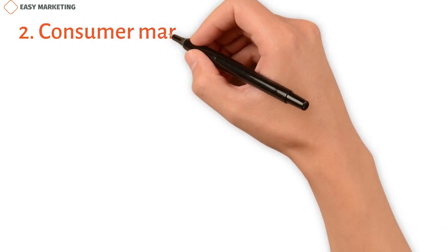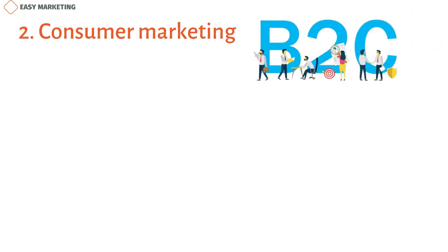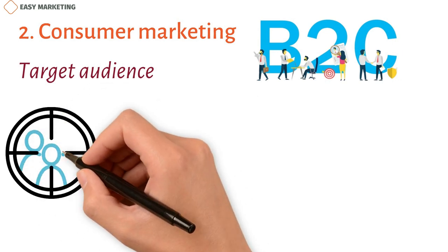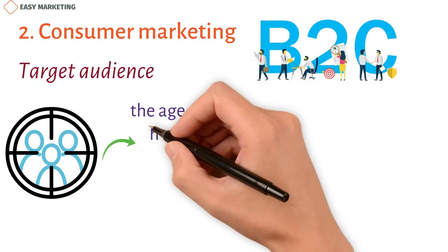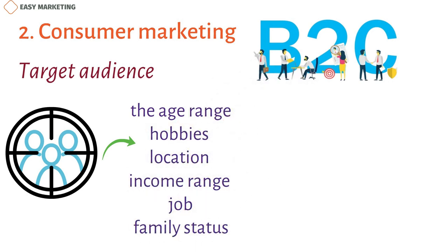Consumer Marketing: When you sell directly to the consumer or end-user, this is called B2C marketing. Target Audience: Your target audience's age, gender, and other characteristics depend on the offering. To properly target marketing efforts, you should know things like the age range, hobbies, location, income range, job, and family status of your target customers.